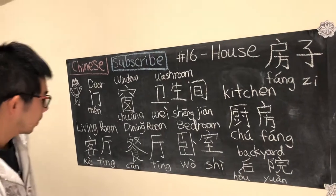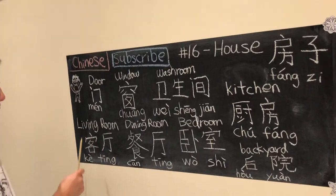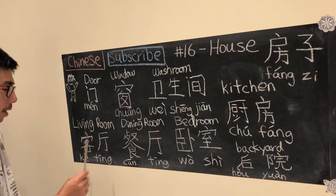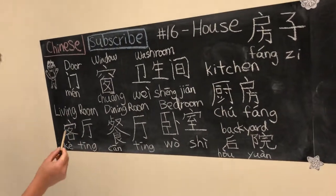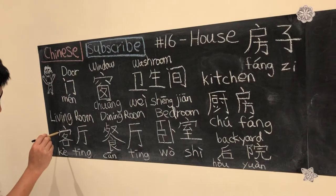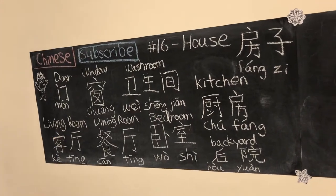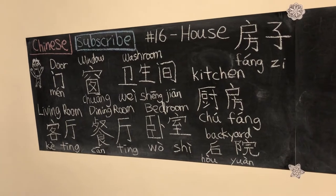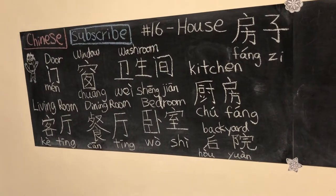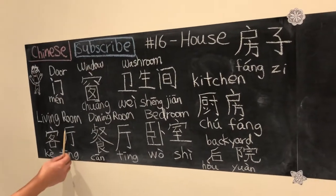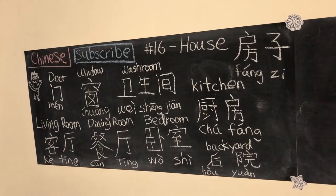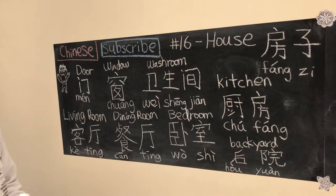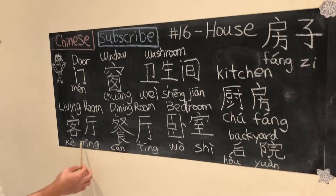Next we have the living room, which is 客厅. 客 means guest, because normally we bring guests to the living room to sit. 厅 is a kind of room — normally ones without doors, more of an open area. So we have 客厅.